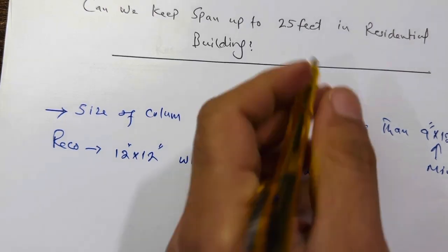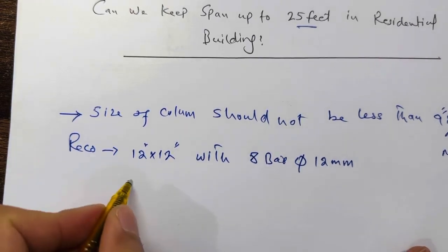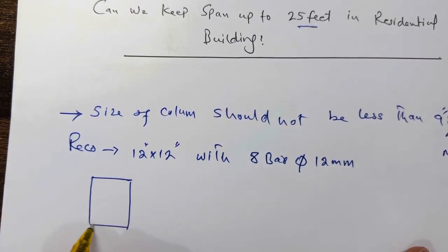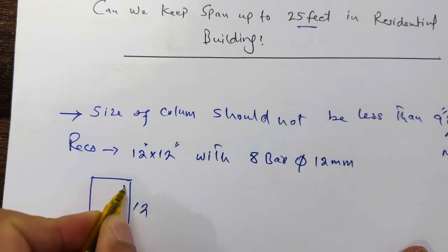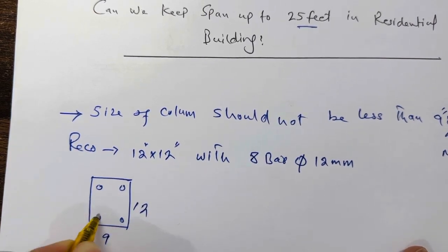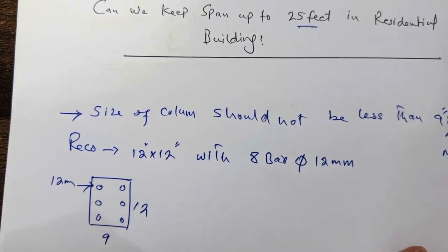This is my recommendation especially for G plus one story if the span is up to 25 feet. So this is minimum size which is 9 inches by 12 inches inside six numbers of steel rods and the diameter should not be less than 12 millimeter.